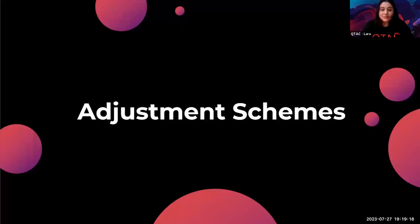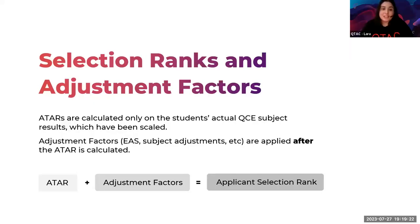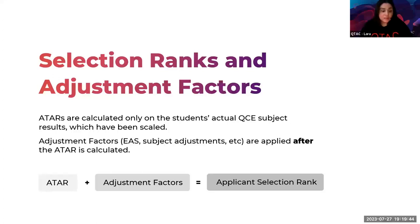Adjustment schemes. For those receiving an ATAR this year, your ATAR is calculated only on your actual QCE subject results which have been scaled — it is a raw ATAR only. Adjustment factors like EAS or subject adjustments are applied after your ATAR is calculated. So it's your ATAR plus adjustments, which equals your application selection rank. You won't be able to visually view this number, but you can call QTAC and we can verbally tell you what your application selection rank is.